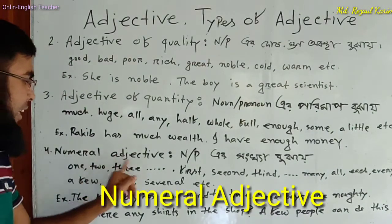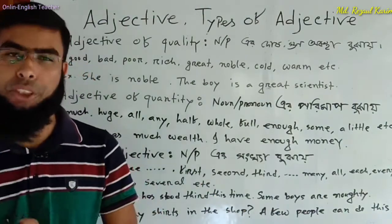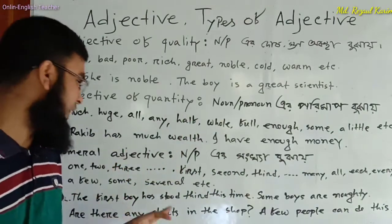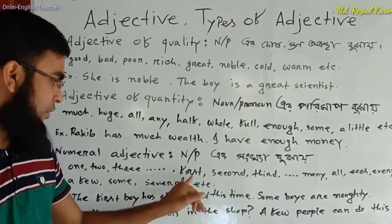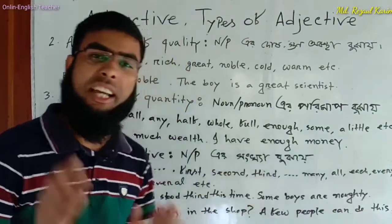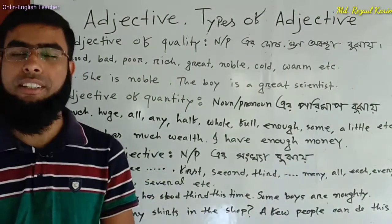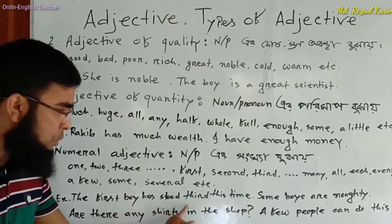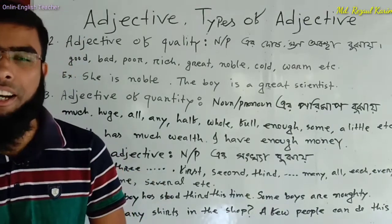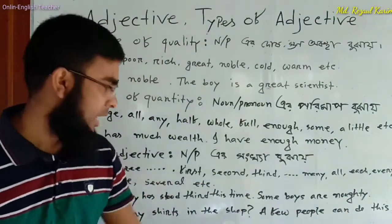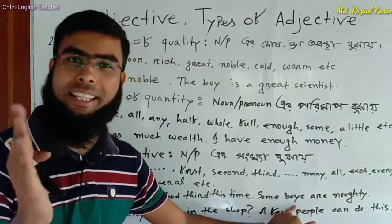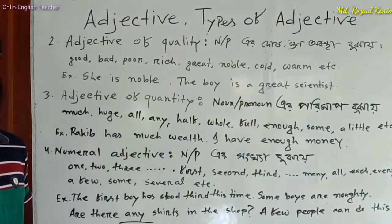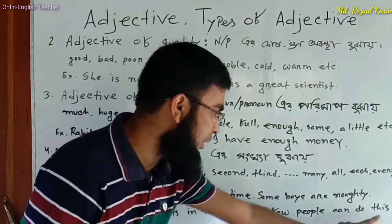Next is the numeral adjective, which indicates number. There are cardinal numbers: one, two, three, four; ordinal numbers showing order; and distributive numerals: each, every, a few, some, several. Example: The first boy stood third this time — 'first' and 'third' are numeral adjectives. Some boys are naughty — 'some' is a numeral adjective. Are there any shirts in the shop — 'any' is a numeral adjective. A few people can do this — 'few' is a numeral adjective.